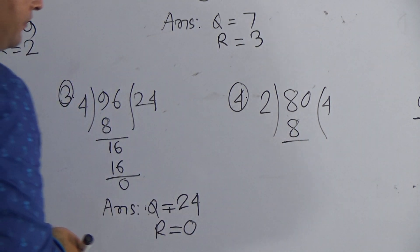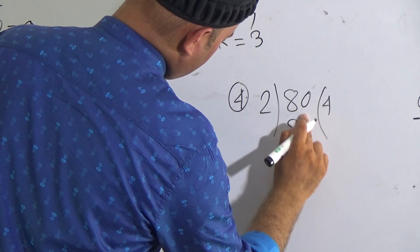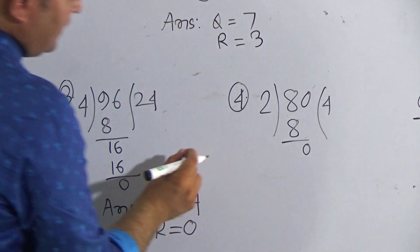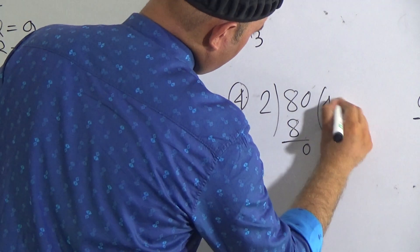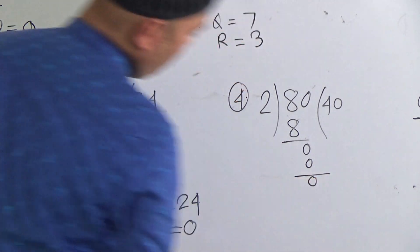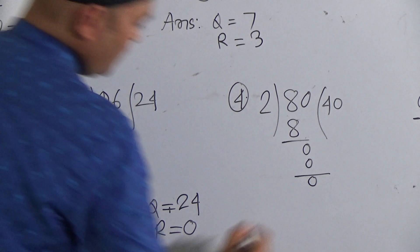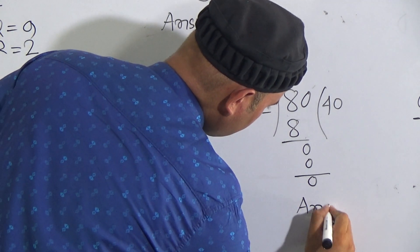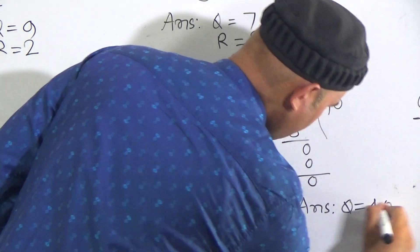Now you have to bring down 0 here. So this 0 you have to bring down here and we know that from the times table of 2, 2 zeros are 0. So here it will be 0. After subtracting 0 from 0 it will be 0.